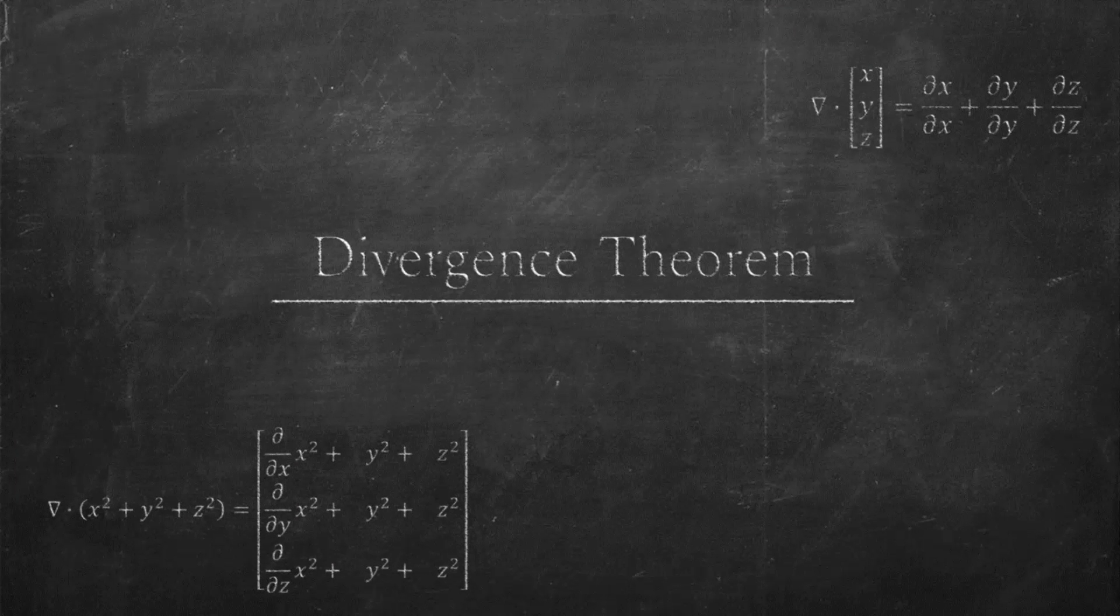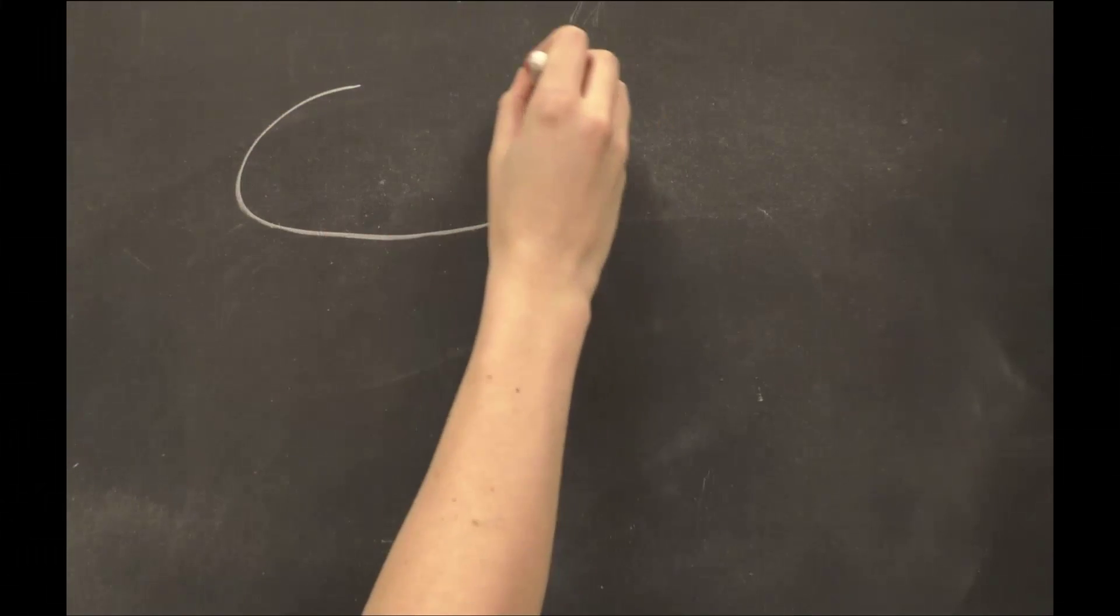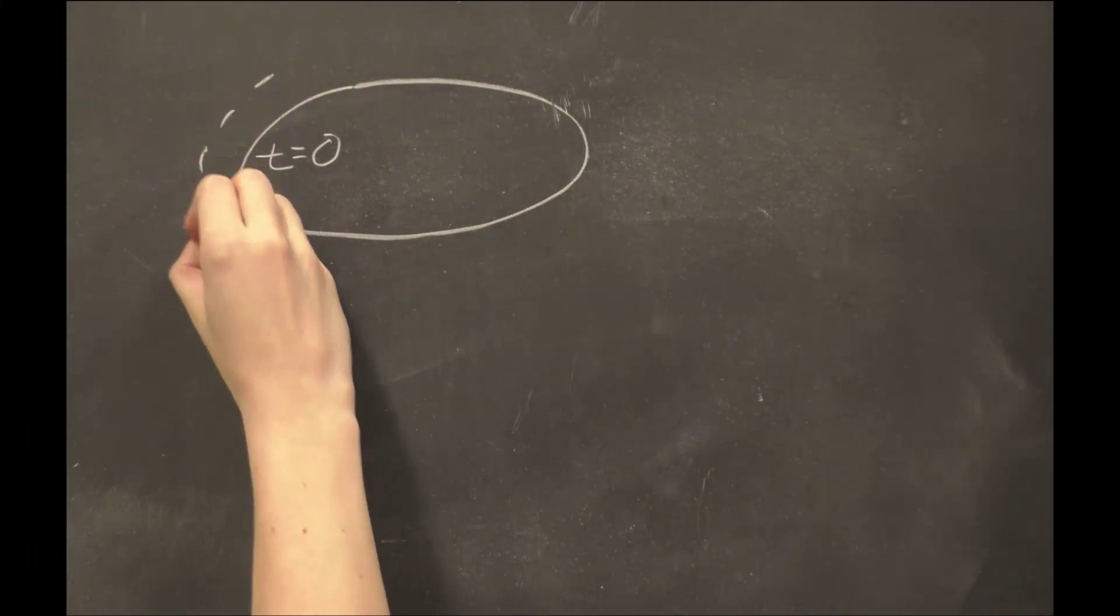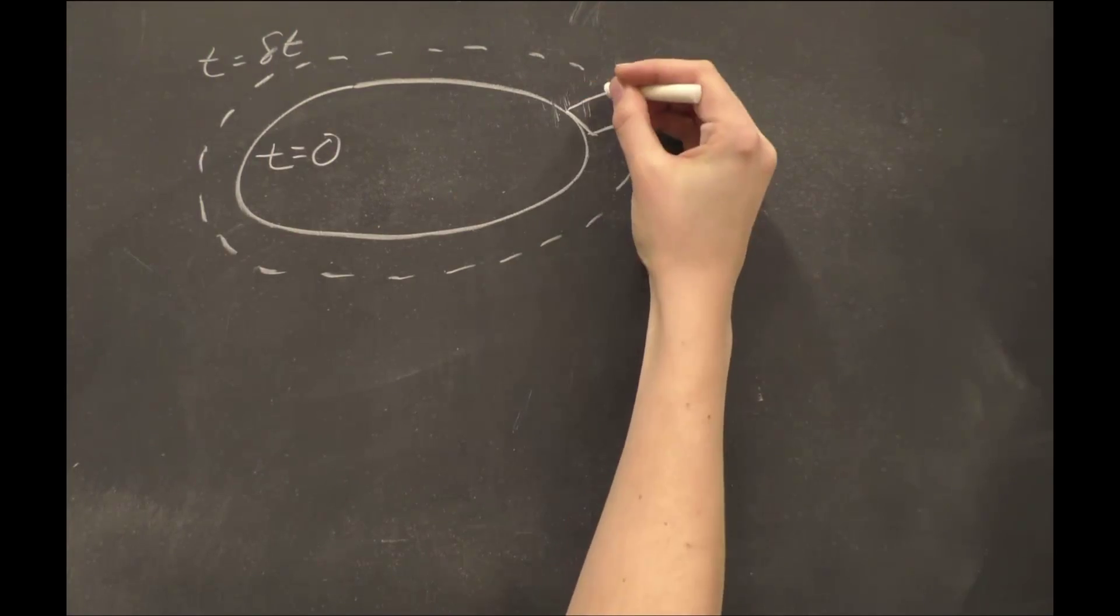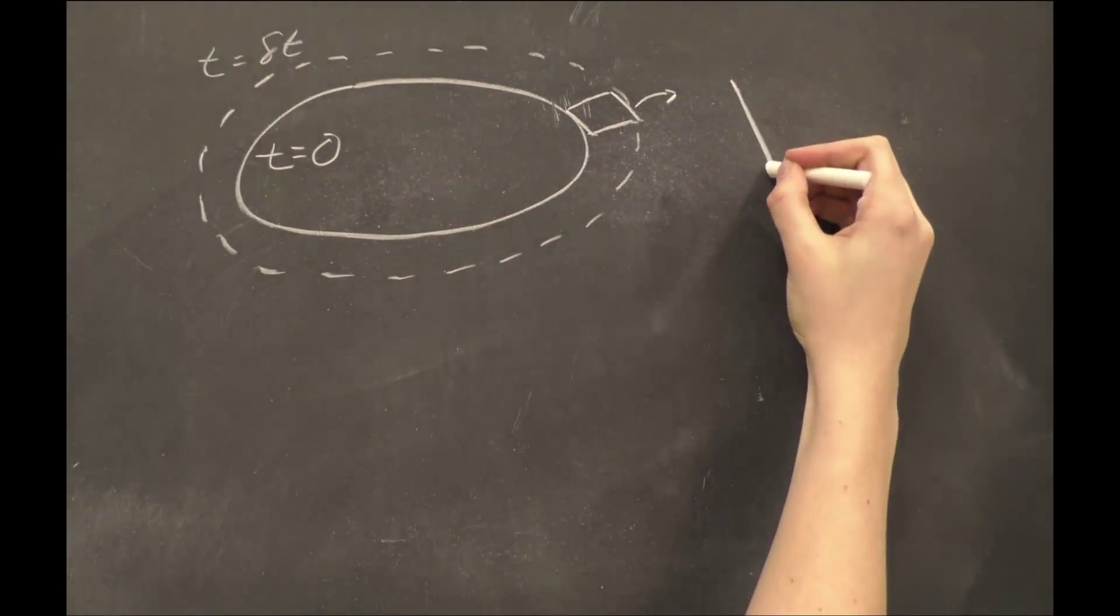Say we have an expanding surface. At t equals zero, we have the surface, and at some time dT later, the surface is larger. We want to find how the volume enclosed by the surface is changing in time.